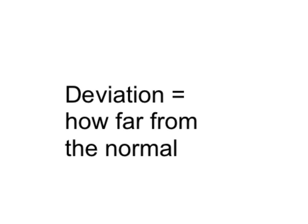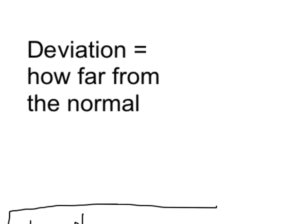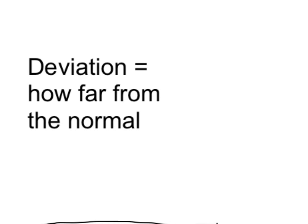First thing we have to do is think about this term deviation. Deviation just means how far from the normal. In this case, we have a population that fits a bell curve with a normal distribution. In the middle here is our mean.